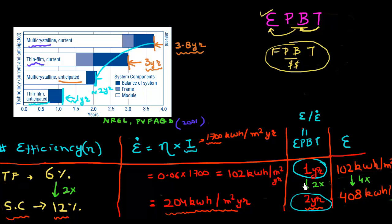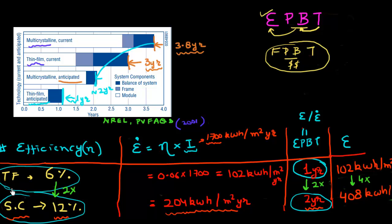I shared my surprise at this data, giving some analysis that the efficiency of single crystalline based modules is quite higher as compared to thin film ones. But still it has a higher payback time, because the amount of energy required to make single crystalline based solar panels is much higher — actually four times higher.